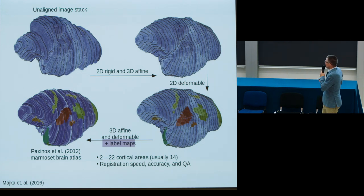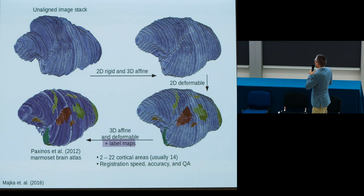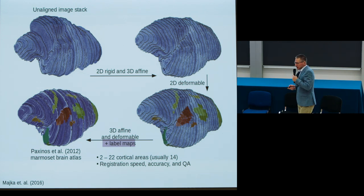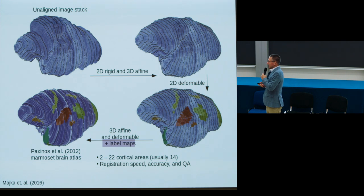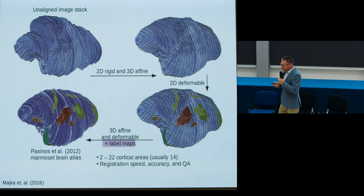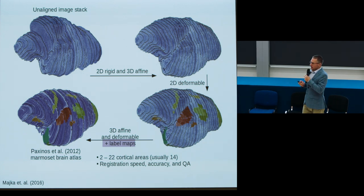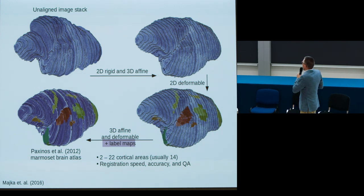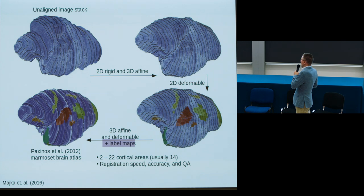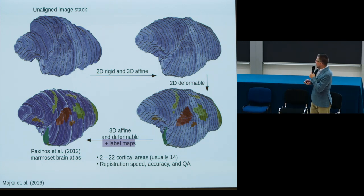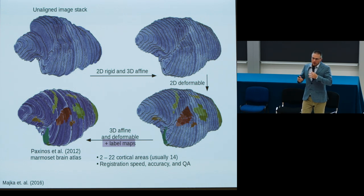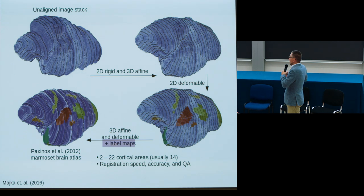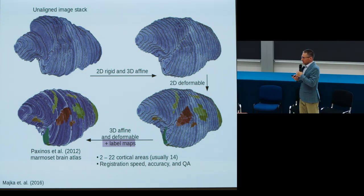A unique feature of our pipeline is the use of label maps—outlines of individual cortical areas drawn manually by neuroanatomists. While including such a manual step in an automated process may seem counterintuitive, it actually greatly increases the accuracy of the registration process by forcing the algorithm to overlap corresponding label maps, and sometimes even decreases computation time. Fundamentally, it is a critical part of our quality assurance procedure, ensuring that whatever mapping we calculate is biologically relevant and does not generate spurious results.